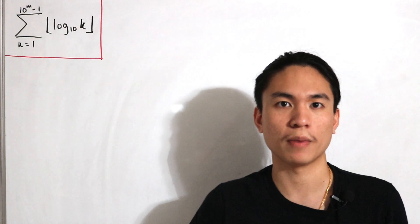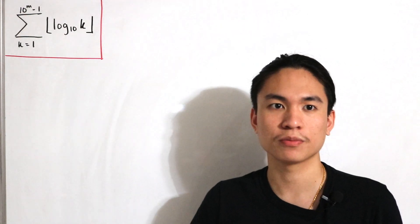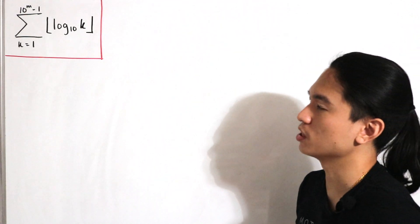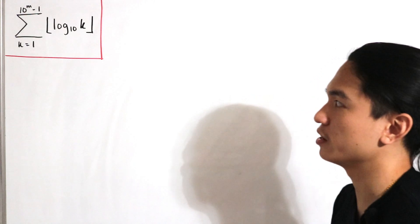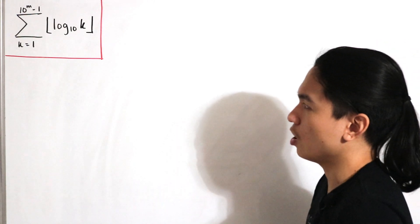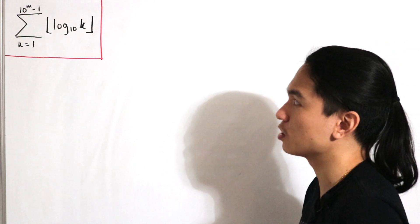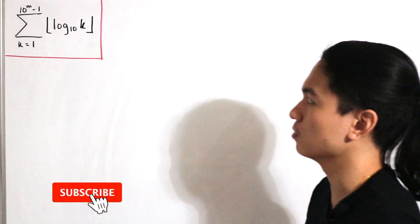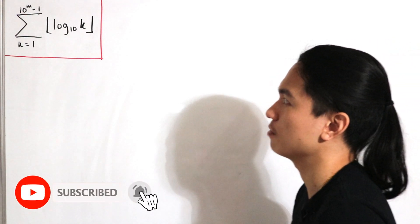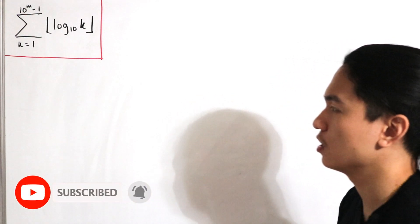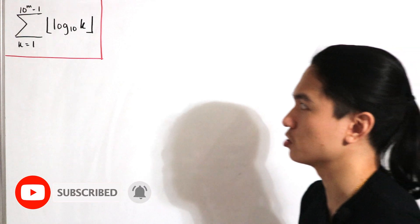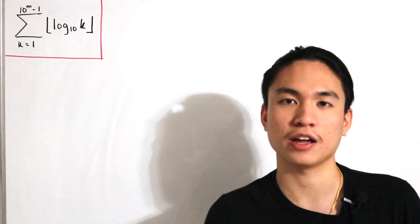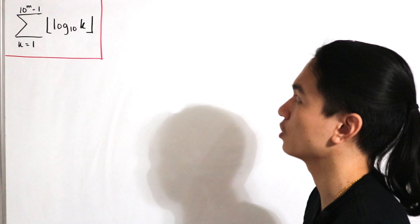Welcome back to another video. Today we have a partial sum with starting index k equal to 1, up to 10 to the power m minus 1, of the floor of log base 10 of k. This is interesting since it's the first time I've covered a summation dealing with the floor function.